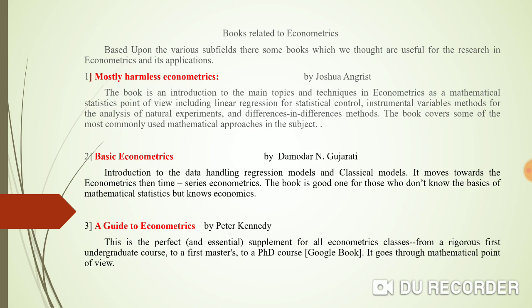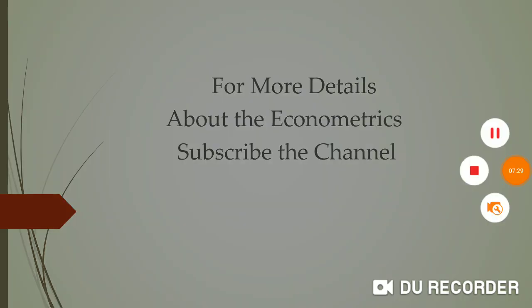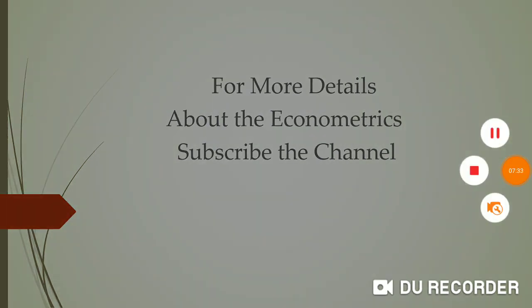A Guide to Econometrics by Peter Kennedy is the perfect and essential supplement for all econometrics classes, from a rigorous first undergraduate course to a first master's or PhD course. It approaches econometrics from a mathematical point of view rather than an economical one, so if you want to study econometrics mathematically, this is the best book. Thank you very much — for more details or questions, you can post to the channel.